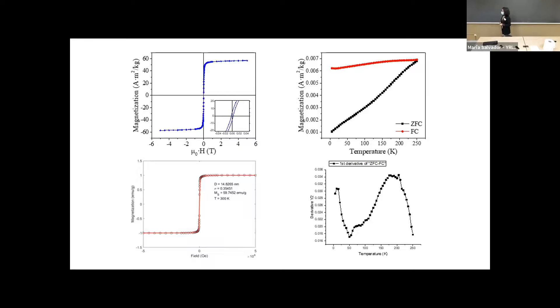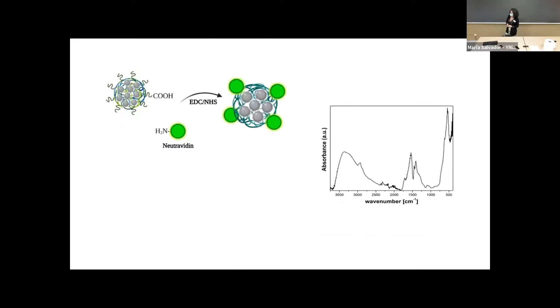Also, when we perform the Langevin fitting to get the magnetic diameter, we observe that the diameter is almost double the diameter that we got from TEM images, which was seven nanometers, and now here the magnetic one is almost 15. So all of these may indicate that our clusters have a lot of interaction within them. But what is interesting for our application is that they have a really good initial magnetic susceptibility. So we are glad to use them.